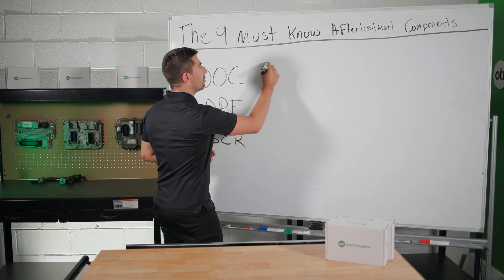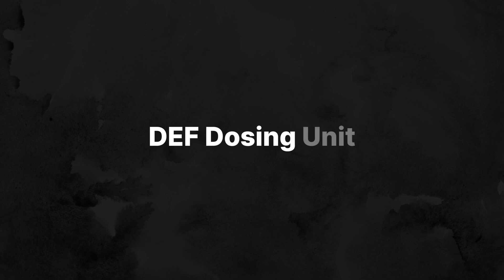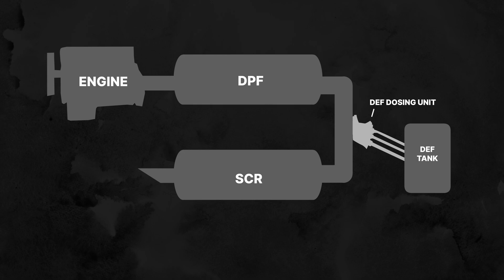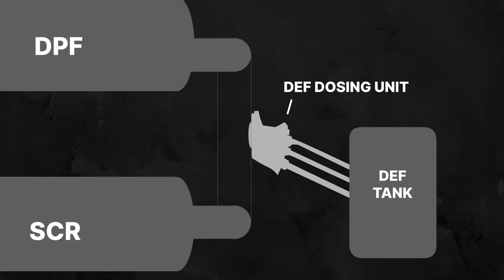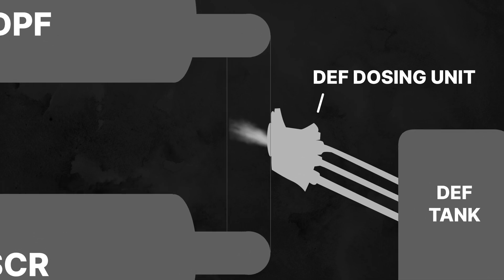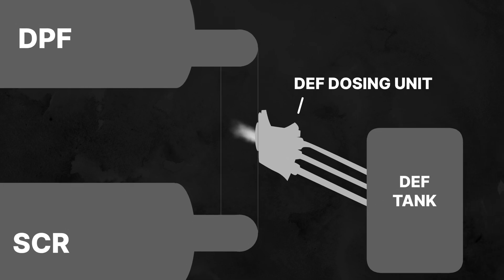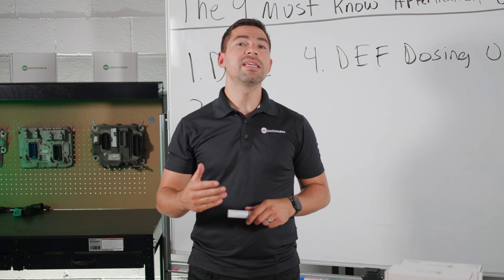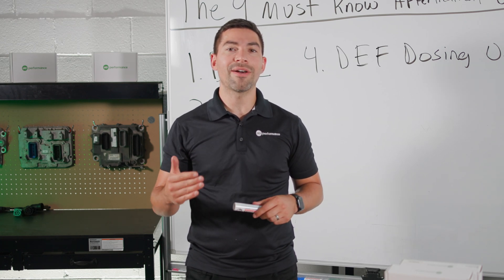The fourth after-treatment component is called the DEF dosing unit. It precisely injects DEF into your exhaust system ahead of the SCR catalyst, ensuring the correct amount of DEF is used to optimize the reduction of NOx emissions. It is typically mounted near the SCR catalyst in the exhaust assembly. Proper maintenance includes checking for crystallization and ensuring the DEF tank heater is operational to prevent freezing in cold climates.